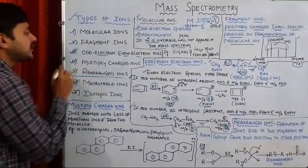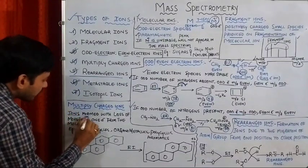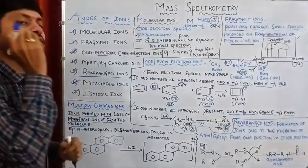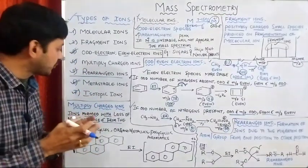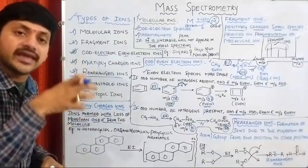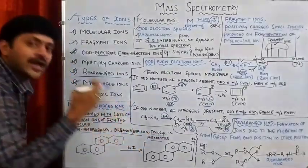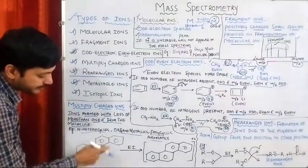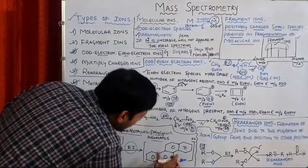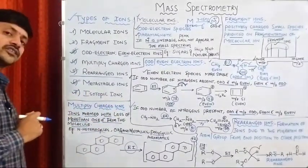The next type is multiply charged ions. The ions produced with loss of more than one electron from the molecule are commonly called multiply charged ions. This situation appears for heterocyclic compounds, organometallic compounds, and polyaromatic compounds. For example, a polyaromatic compound subjected to electron impact gives a molecular ion with a +2 charge — these are multiply charged ions.